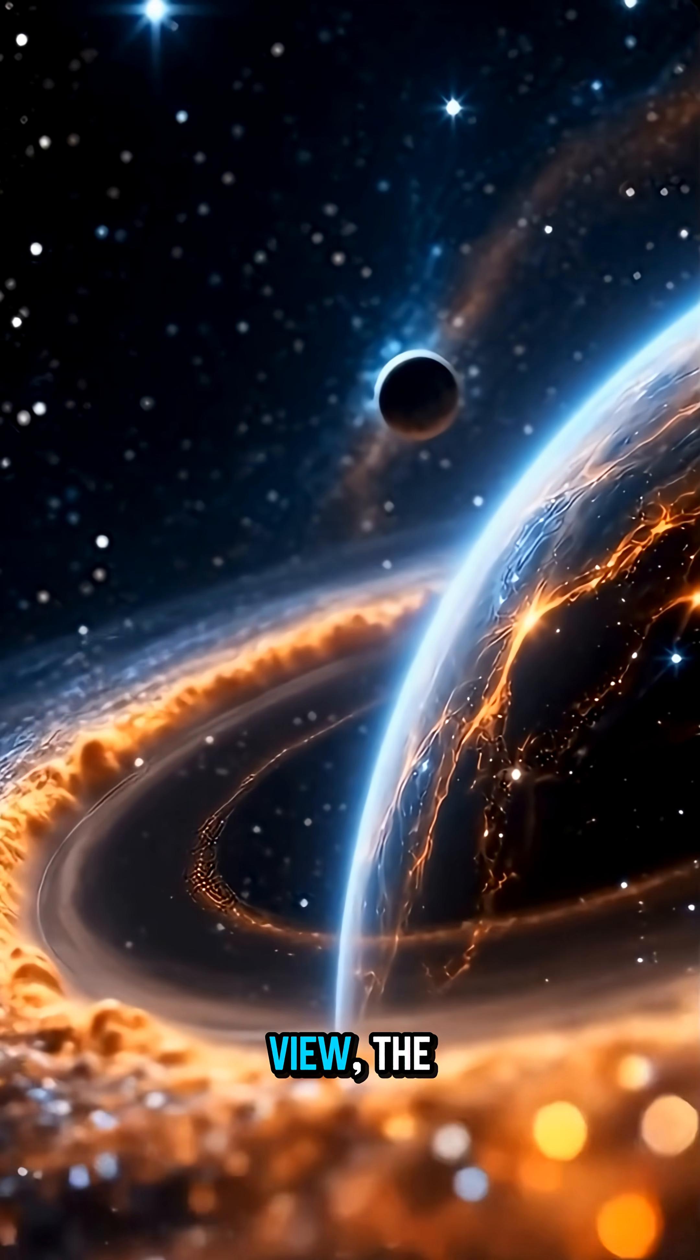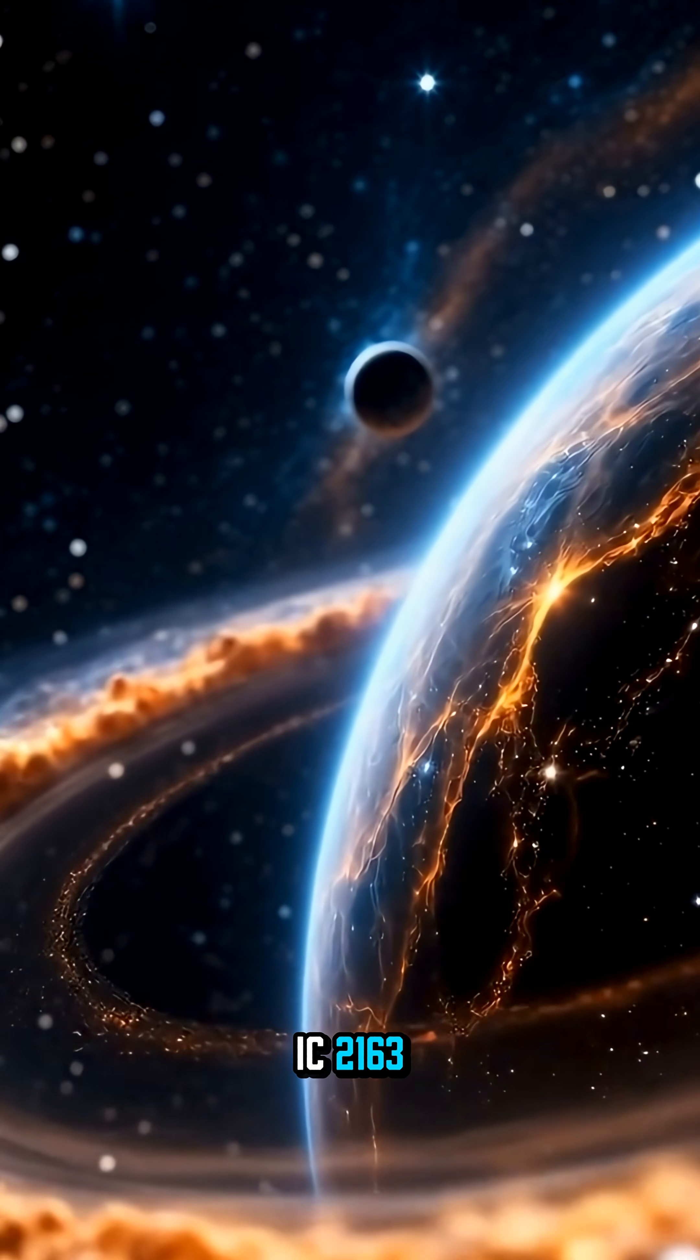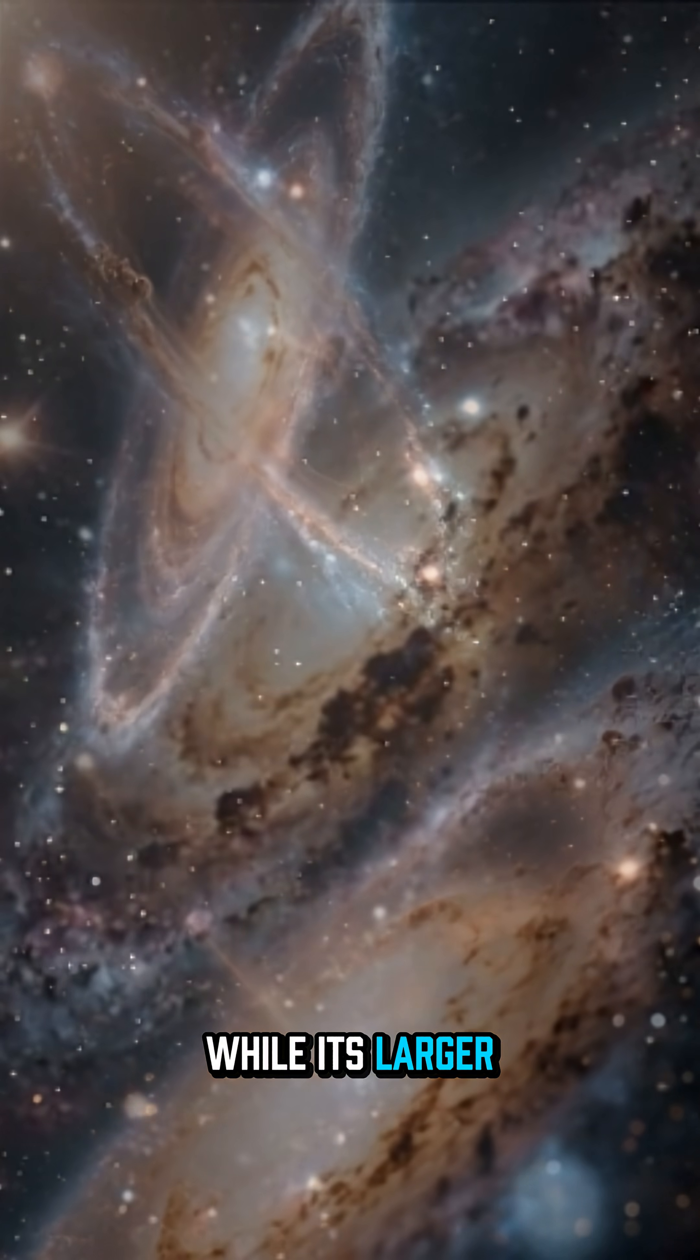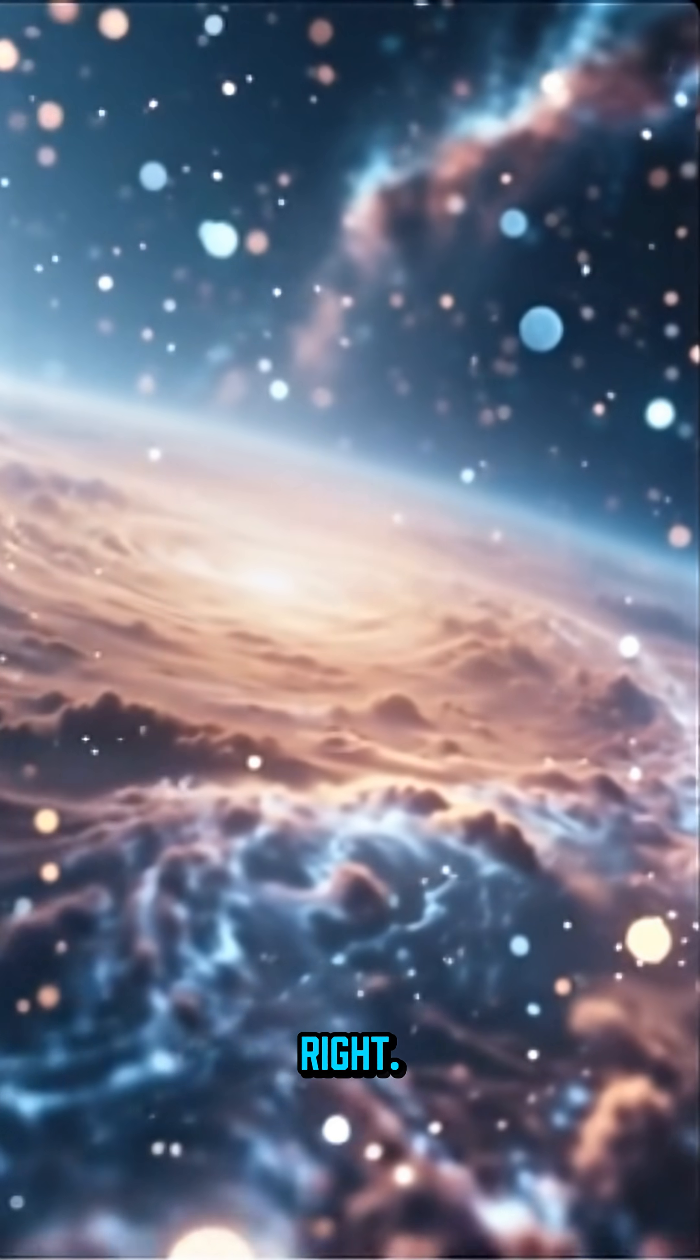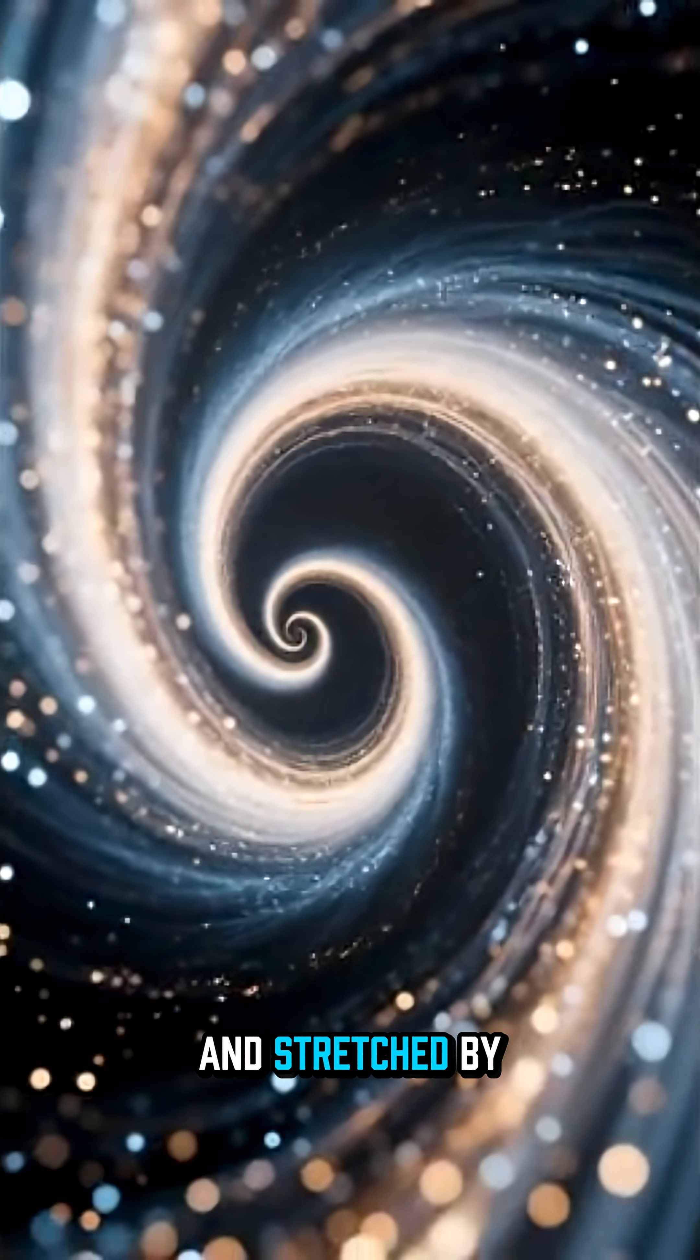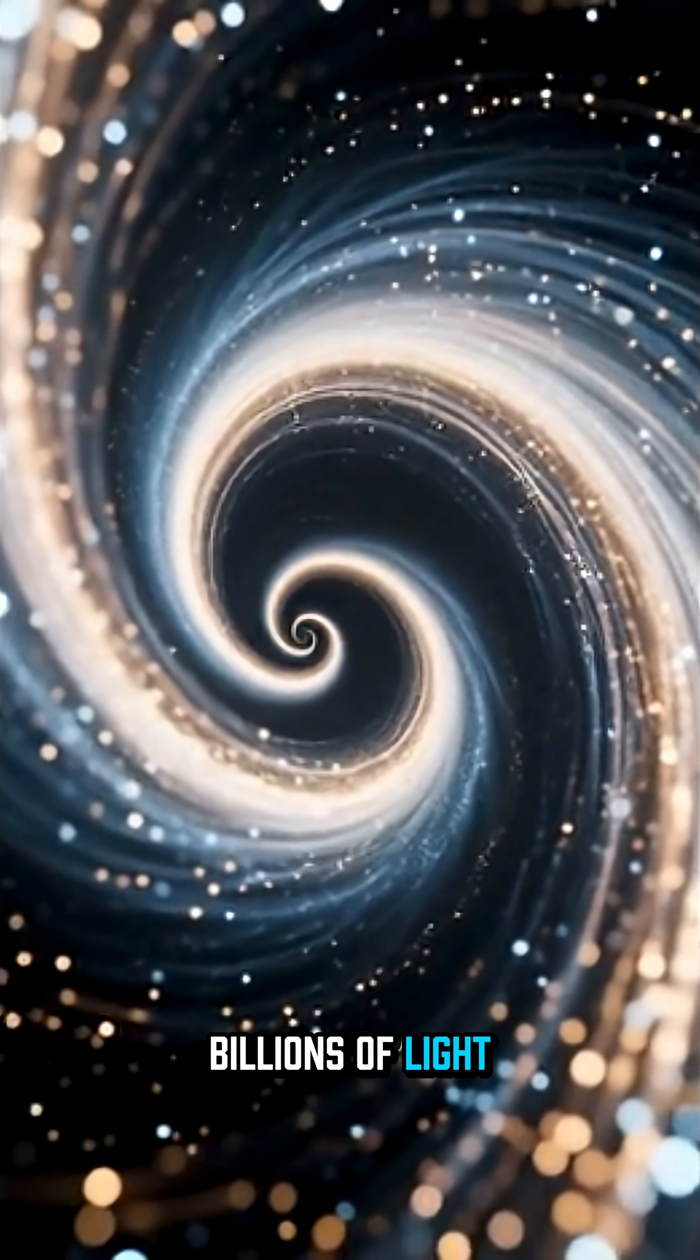In this striking view, the smaller galaxy IC 2163 curves toward the upper left of the frame while its larger companion NGC 2207 spans the center and lower right. Their graceful spiral arms are distorted and stretched by mutual gravity as they interact billions of light years away.